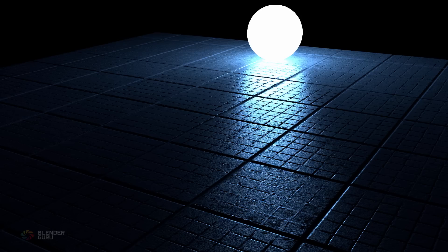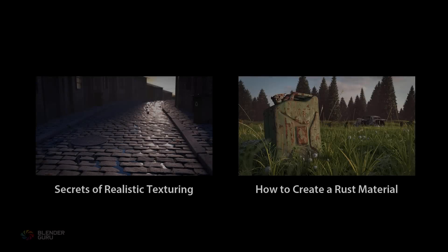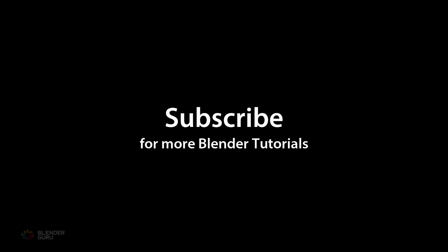And if you'd like to take it a step further, try adding your own grunts, scratches, or paint to the texture. For more info on texturing, watch my secret to advanced texturing tutorial, or how to create rust. If you learned something from this video, click like. And so that you don't miss future Blender tutorials like this one, click subscribe. Thanks for watching.